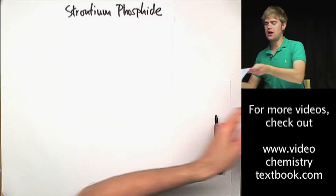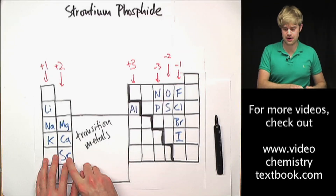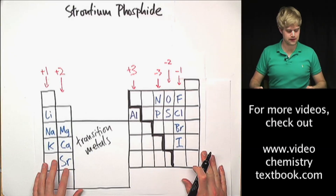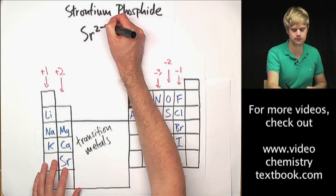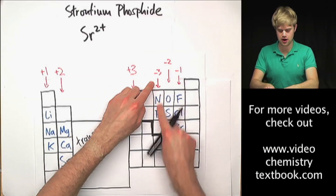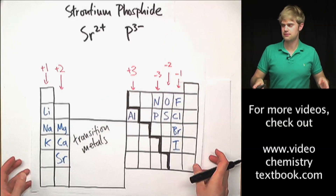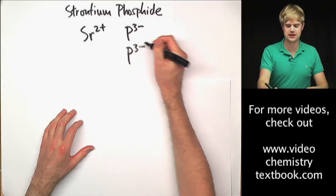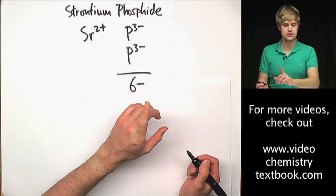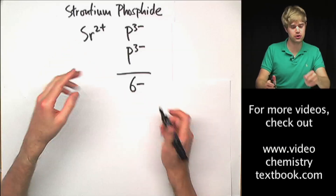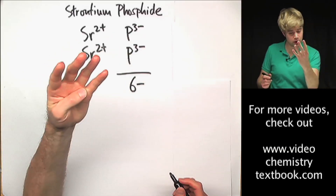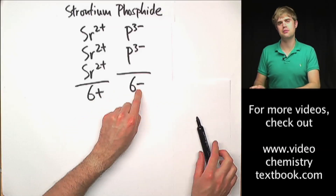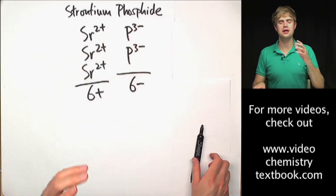And finally, strontium phosphide: strontium Sr is right here, it's a metal, and phosphide is what we call phosphorous when it has a charge, so it's a non-metal. Charges are important: strontium is in this column which means it's Sr²⁺; phosphide — phosphorous is in this column which means it has a charge of 3⁻. We add another phosphide so that we have a total negative charge of 6⁻. To balance out the 6⁻ charge, I'm going to add more strontiums which have 2⁺ each — so 2⁺, then 4⁺, then 6⁺ — and now 6⁺ balances out the 6⁻. Now I'm going to write the chemical formula to show how many of each atom I need to balance out the charges.